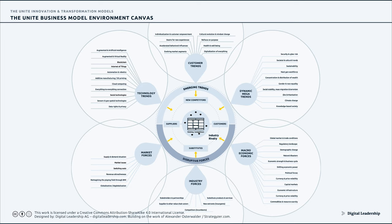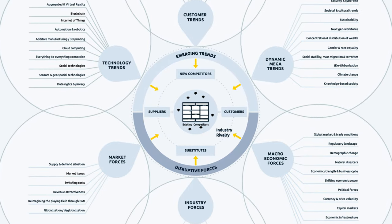I'm very happy to share with you today more about the UNITE Business Model Environment Canvas. The canvas is organized in several layers. At the very center is your own business model, which you can consciously design with the help of the UNITE Business Model Canvas and framework, explored in a separate video series. Your business is surrounded by its immediate existing competitors, which is a zone of competitive rivalry.